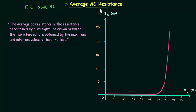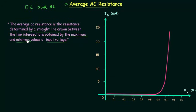First I will define what average AC resistance is, then we will calculate it. The average AC resistance is the resistance determined by a straight line drawn between the two intersections obtained by the maximum and the minimum values of input voltage. We need the maximum and the minimum values of input voltage, and by using these values we will have two intersections. When we connect these two intersections we will have the straight line representing the average AC resistance.